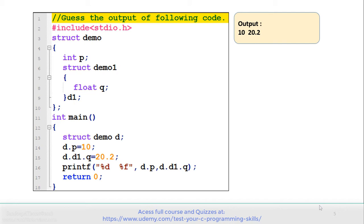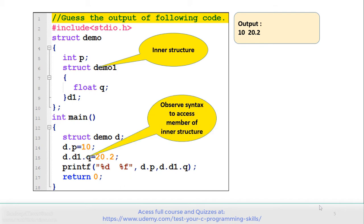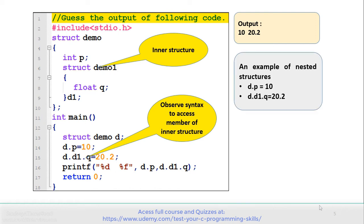Note that demo1 is an inner structure declared inside structure demo, and d1 is a variable of demo1. The syntax used to access the content of d1 is d.d1.q = 20.2, which is the correct syntax to access the content of inner structures. That's why the output of this program is 10 and 20.2.